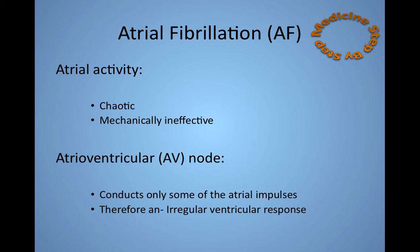The atrioventricular node, which transmits the atrial impulses to the ventricles, only manages to conduct some of the impulses, and so there is an irregular ventricular response.